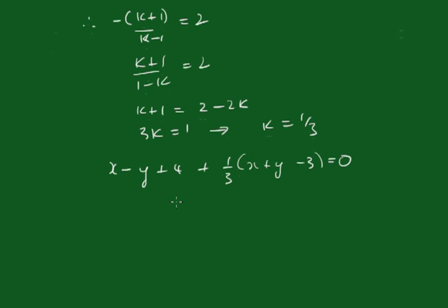Multiply throughout by 3, we get 3x - 3y + 12 + x + y - 3 = 0. So this becomes 4x - 2y + 9 = 0.